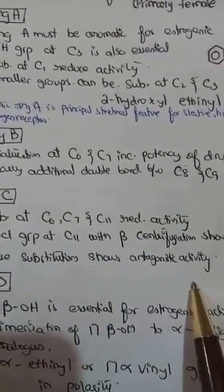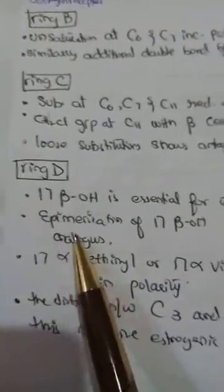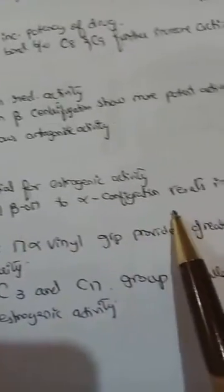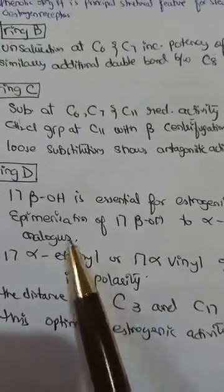Ring D: 17β-hydroxy is essential for estrogenic activity. Epimerization of 17β-hydroxy to the alpha configuration results in formation of a less active compound or less active analog.